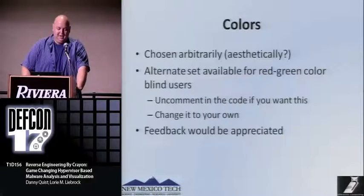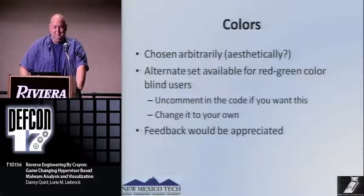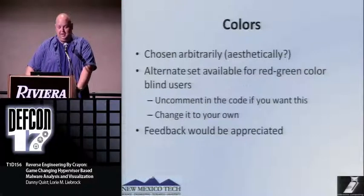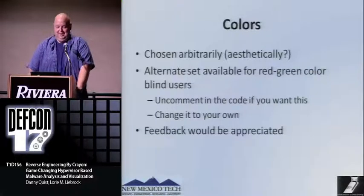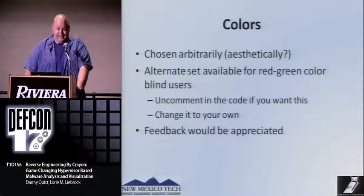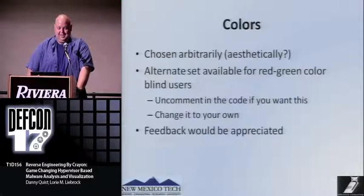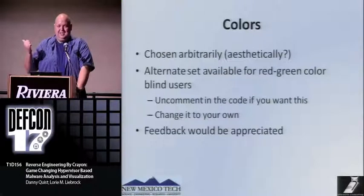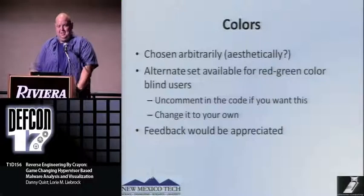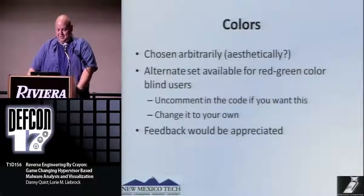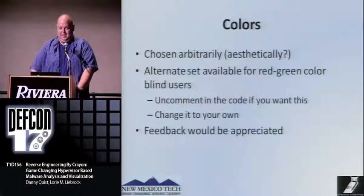These colors were chosen somewhat arbitrarily, but I showed them to my friend Kazmir, and he looked and said, 'That's great Danny, but why are all your colors brown?' It turns out he's red-green color blind. I sat down with him and he was nice enough to help me pick out a set that looked okay. Inside the code there's actually a set of color-blind-friendly instructions available, though it's not compiled by default right now. Any feedback on this would be really appreciated — I want to make sure it's a useful tool for everyone.